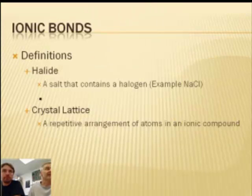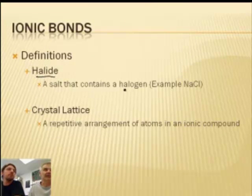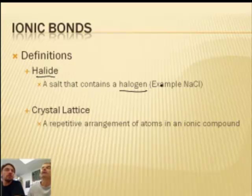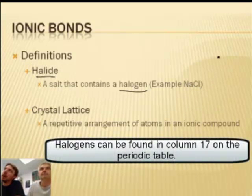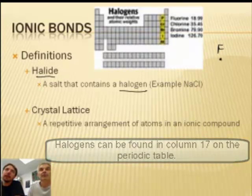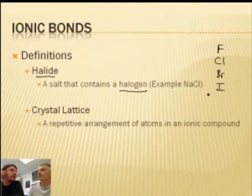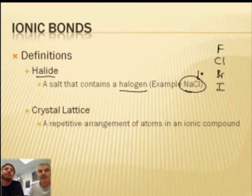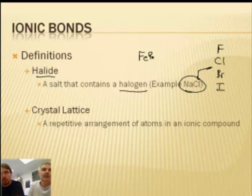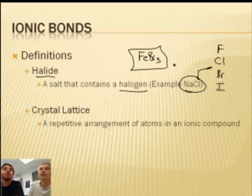Some definitions: a halide is a salt that contains a halogen. Halogens are everything in the fluorine group — fluorine, chlorine, bromine, iodine. Astatine also exists but is the rarest element in the universe, so you're probably not going to run into that. So sodium chloride is a halide, and iron-3-bromide would also be a halide.